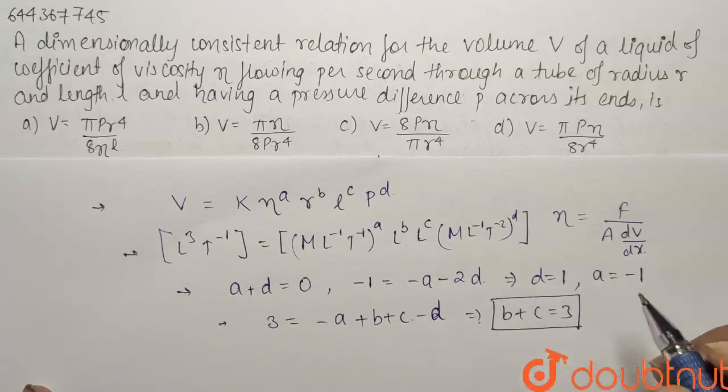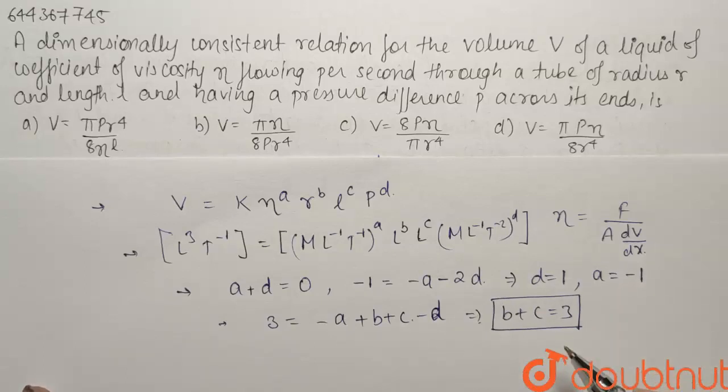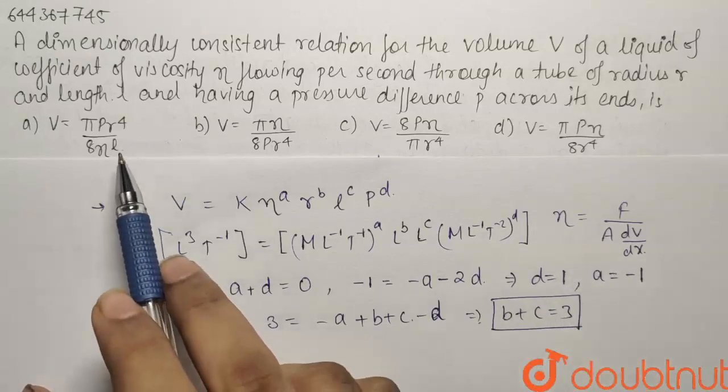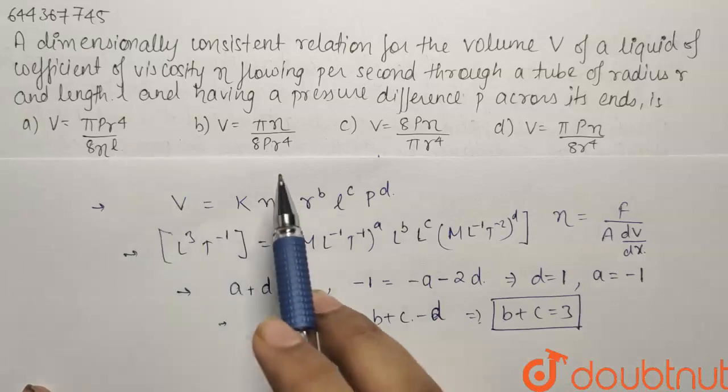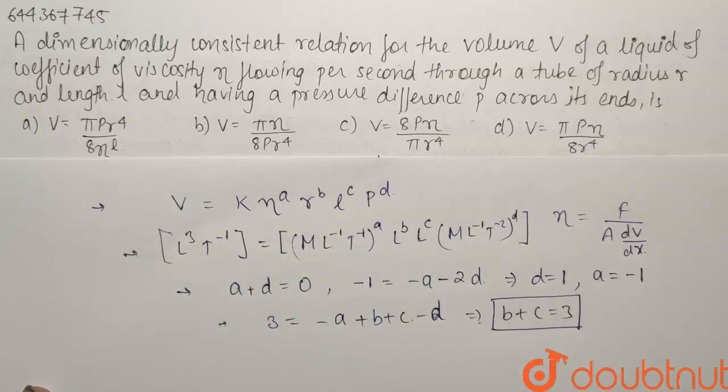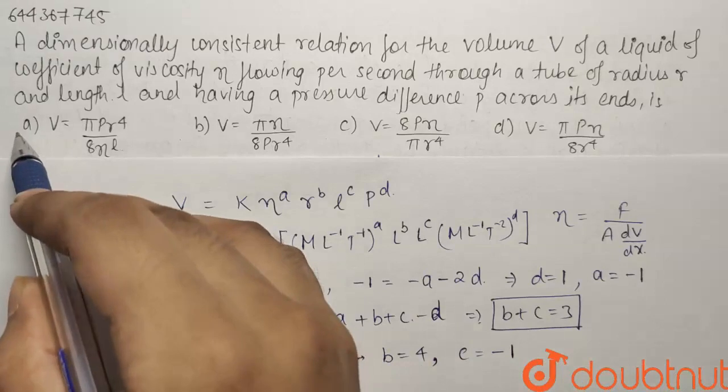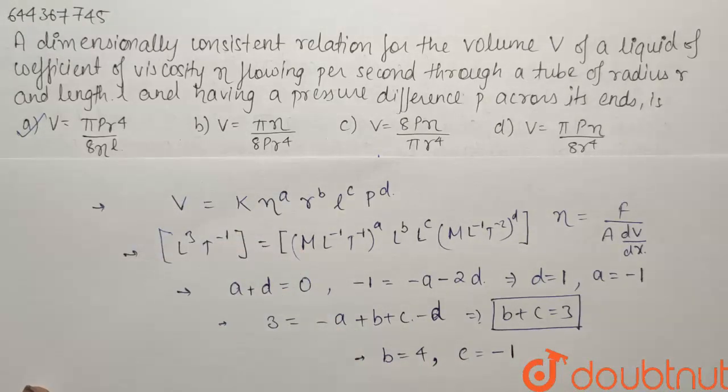Now you have two variables and it is not possible to solve this equation furthermore so we will have to have a look at the given options. Now in all the options the value of R is either R to the power 4 or R to the power minus 4 so if I take R to the power 4 then B will be equals to 4. So if B is equals to 4 the value of C comes out to be equals to minus 1 so from that relation our option A is satisfying.